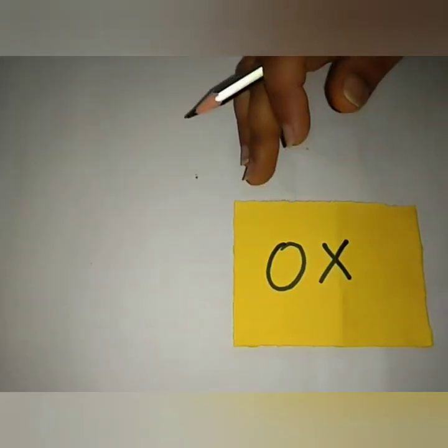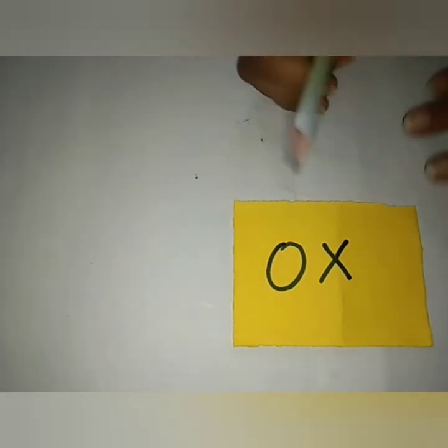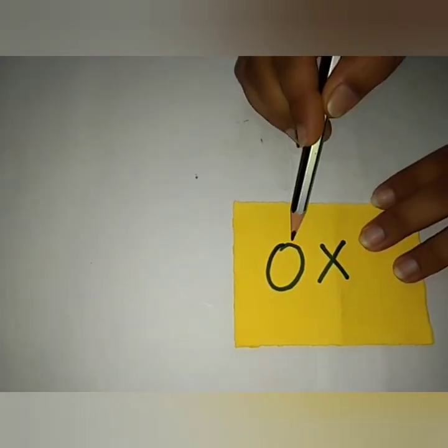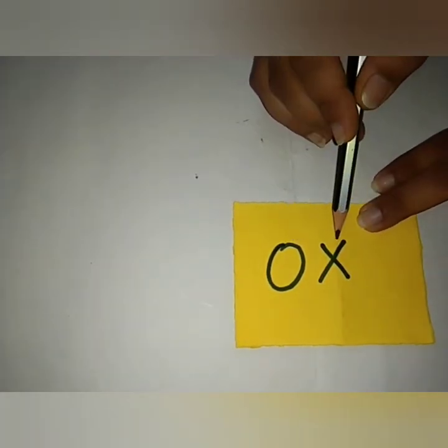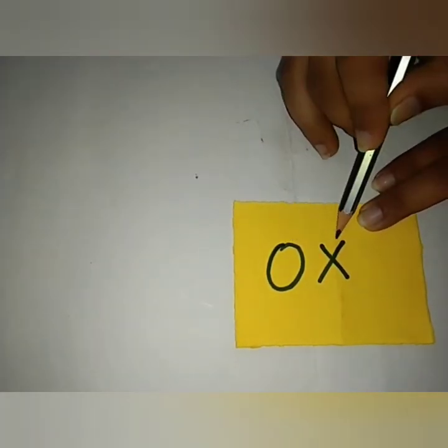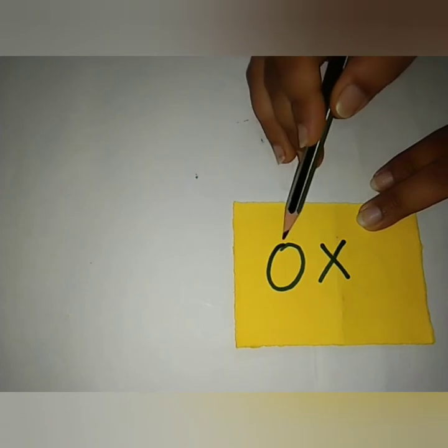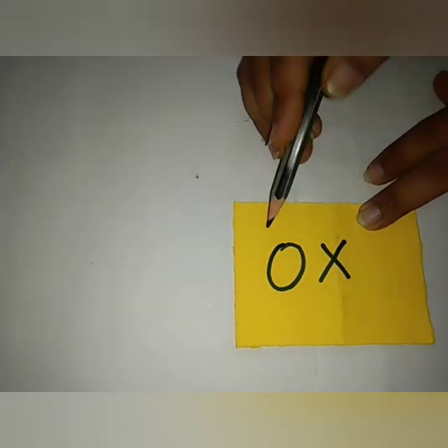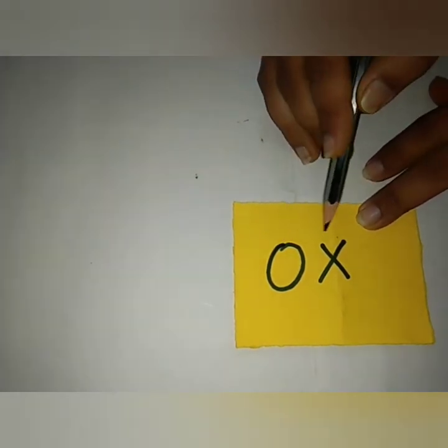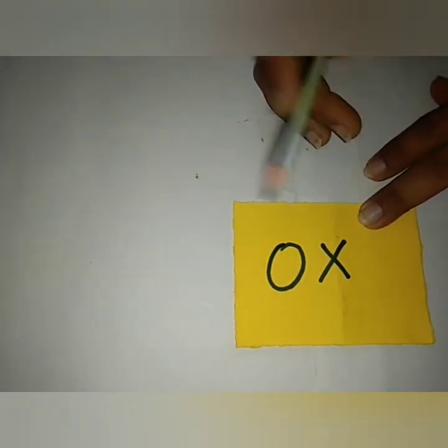One more set of words, of O sound words, okay? What is this? O. What is this? T. O. Ox. Ox. Ox.